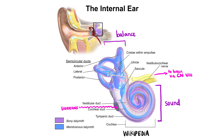The vestibular apparatus is involved in maintaining our balance and sense of position. It's made up of the semicircular ducts, the saccule and utricle. The semicircular canals are filled with fluid called endolymph which moves when the head moves, stimulating stereocilia and sending signals to the brain to interpret the position of the head via the vestibulocochlear nerve.